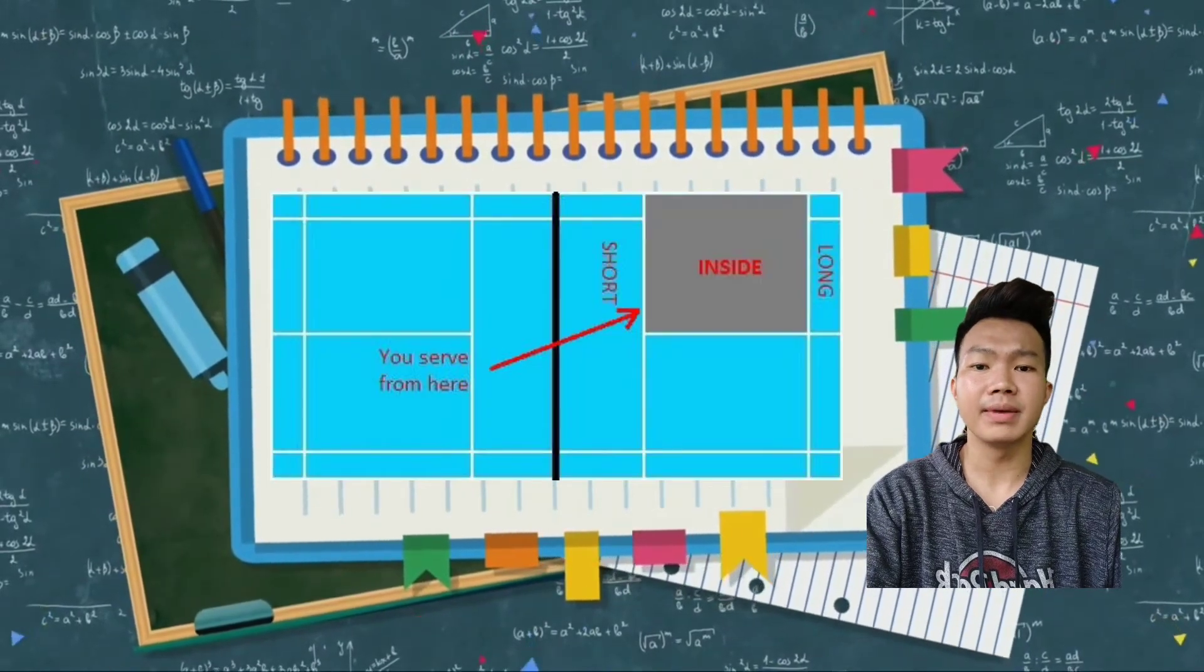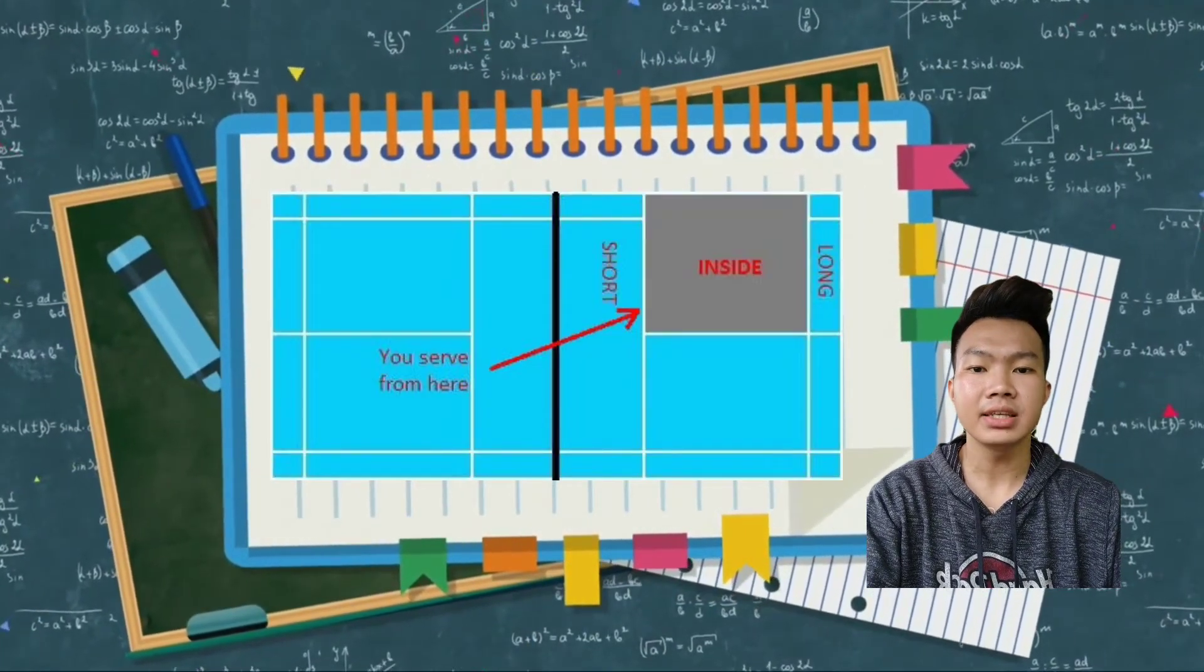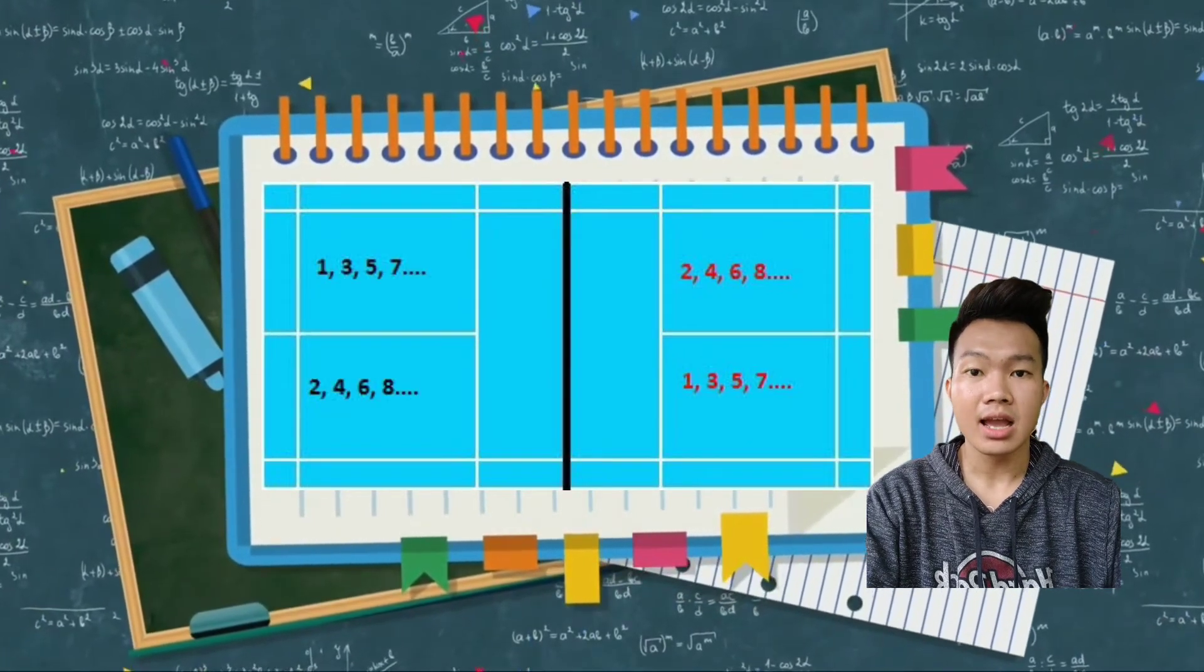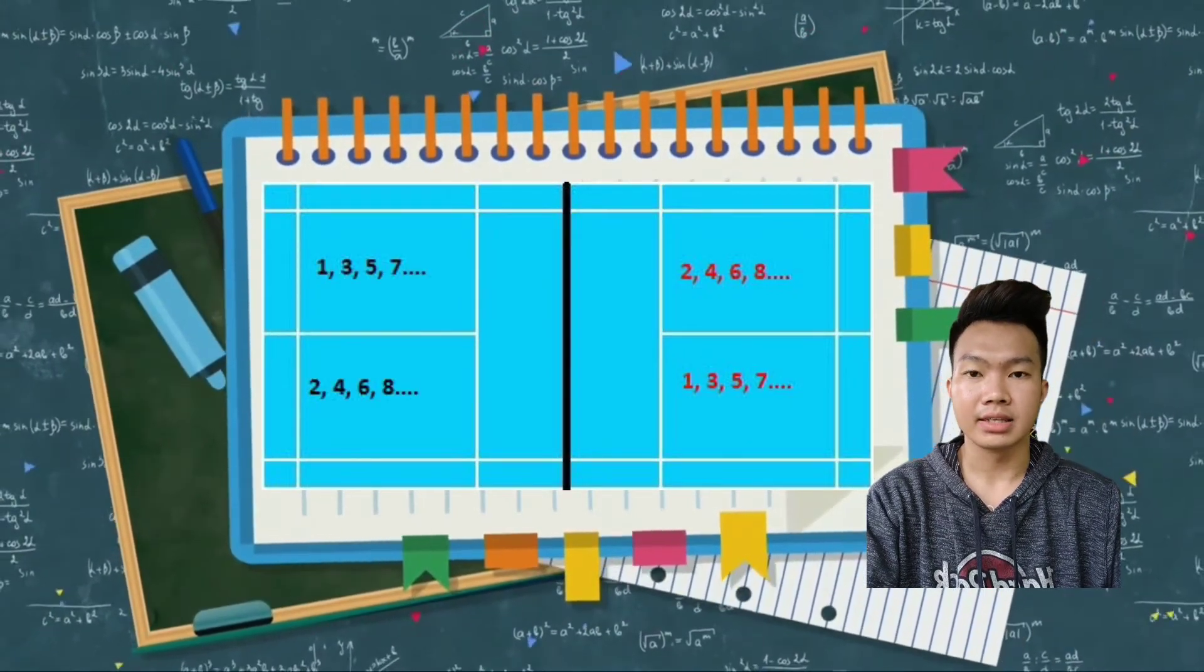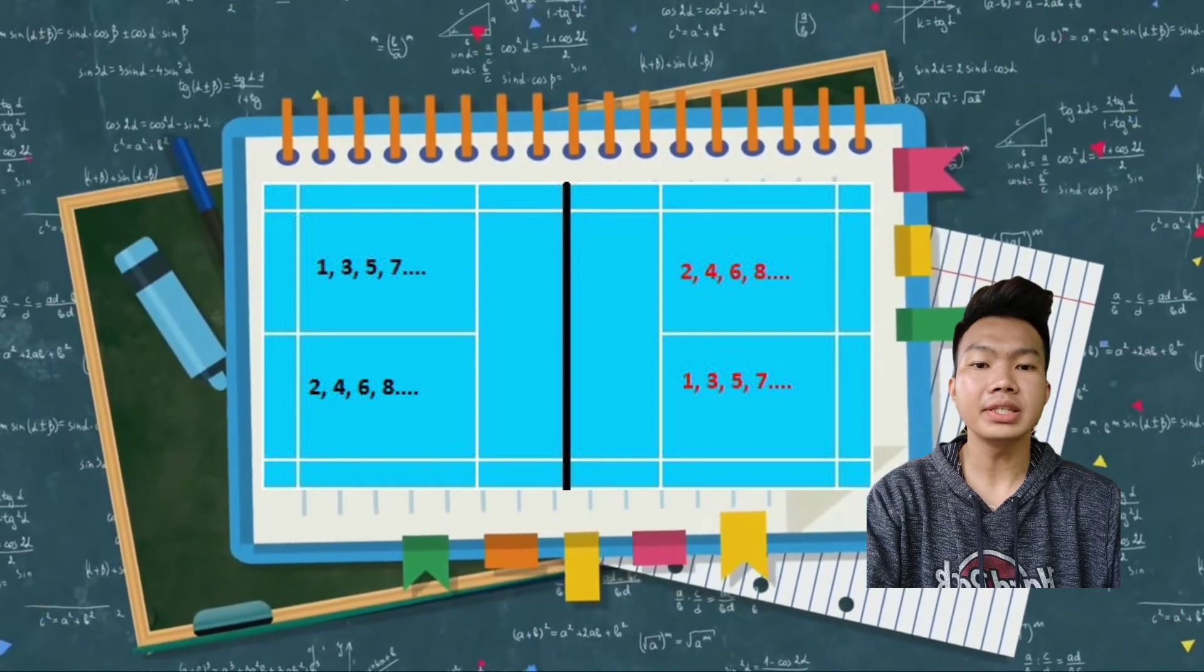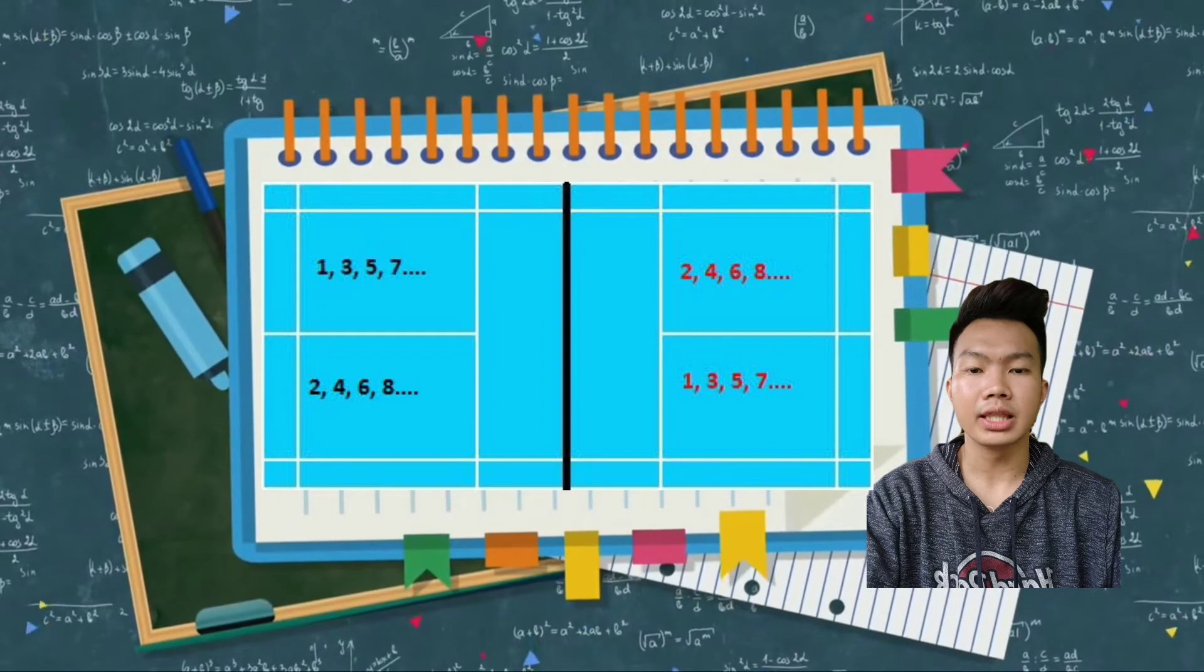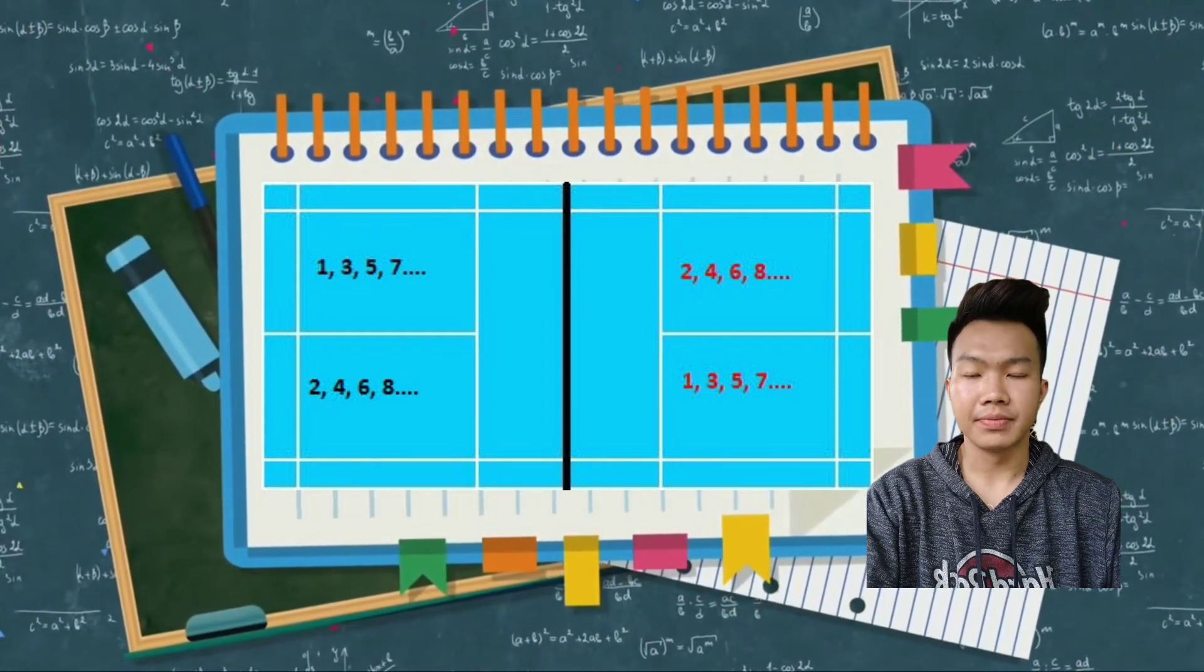Ang unang magsaserve ay magsisimula sa right service court at kapag may nakaskore naman, ay magiging odd na ang score. As a result, ang service naman ay magsisimula sa left service court ng player or pair na magsiserve.